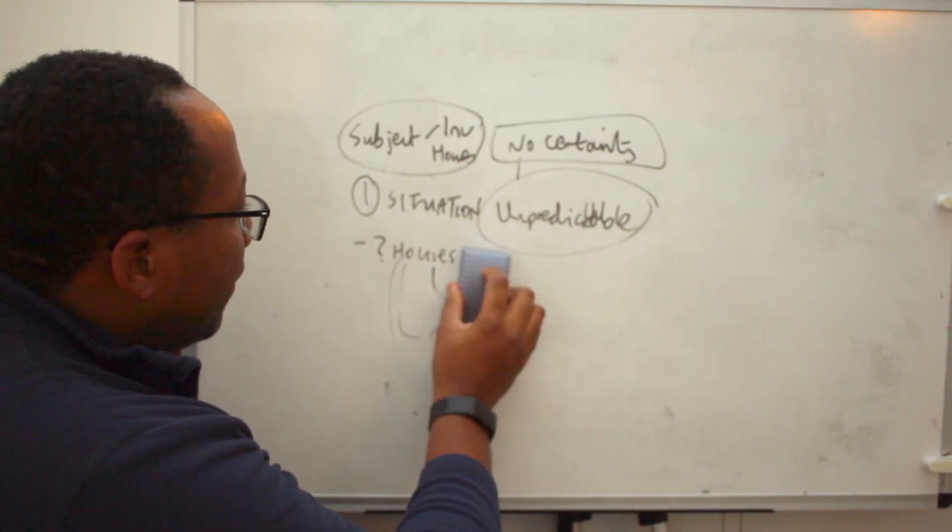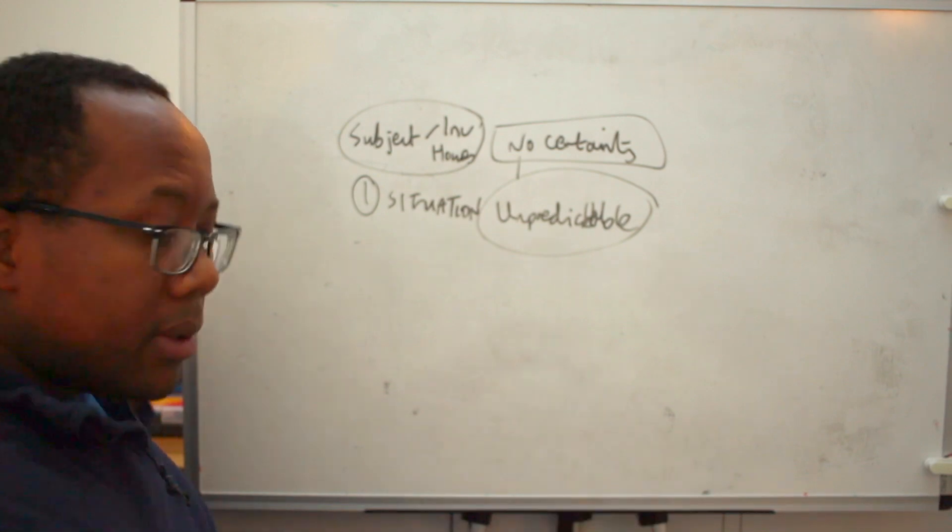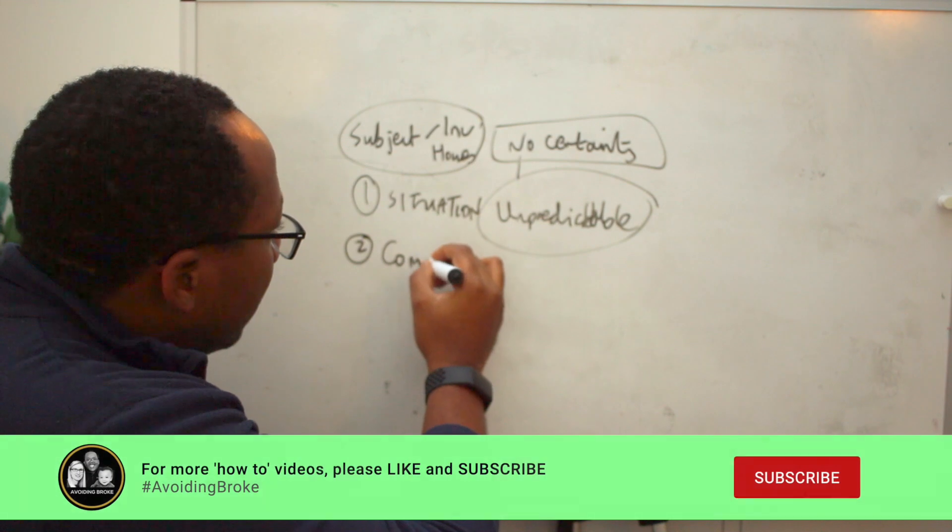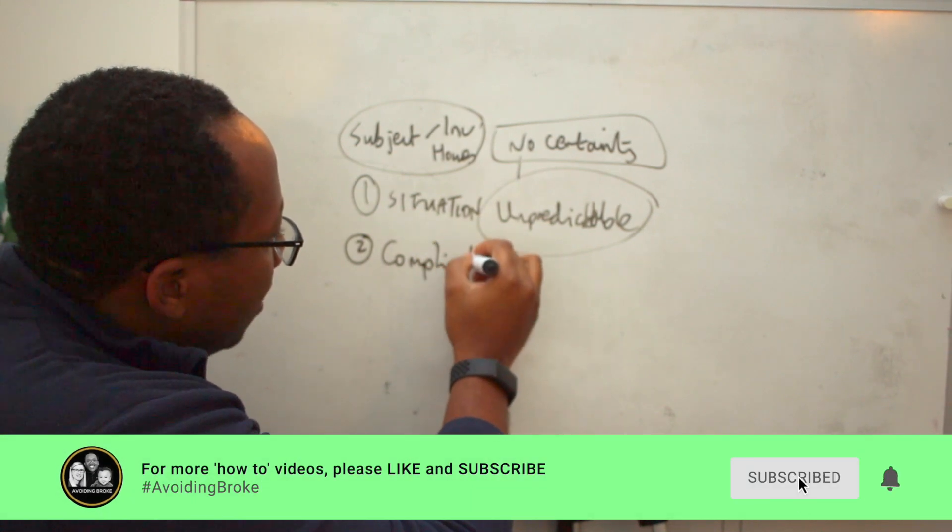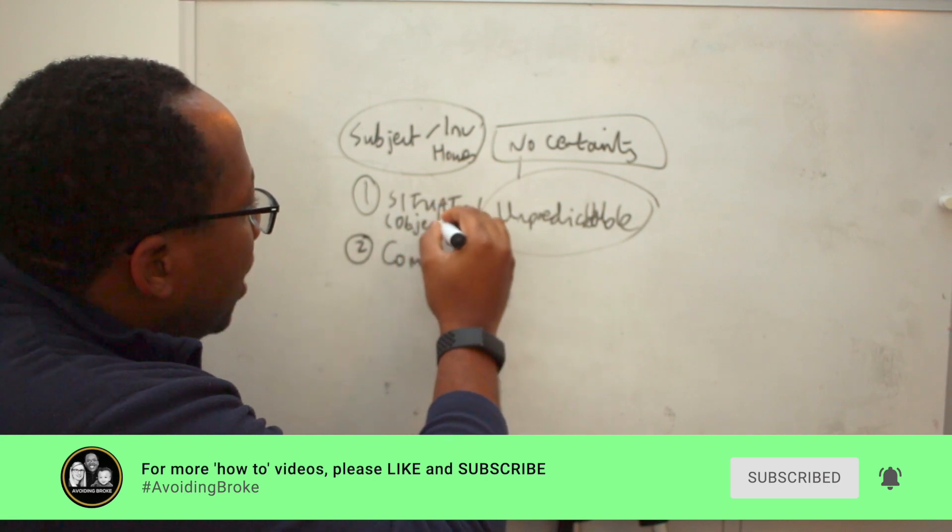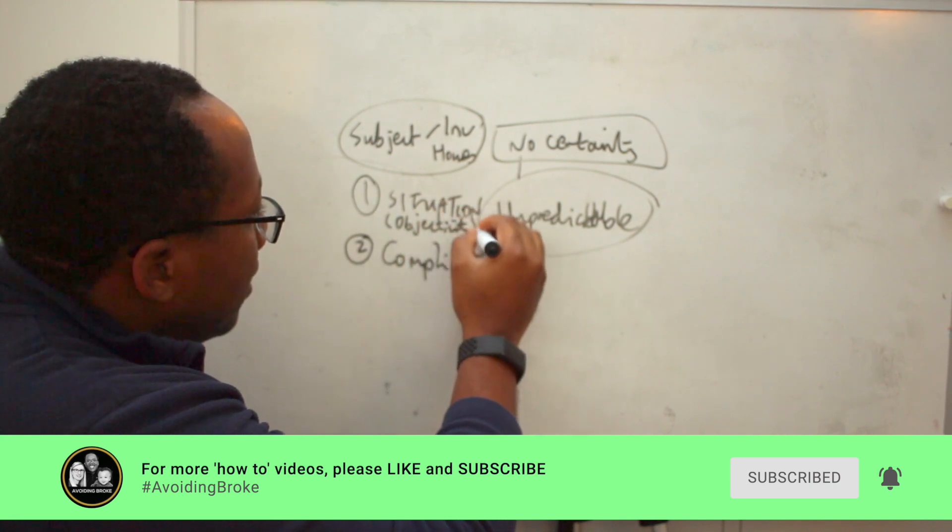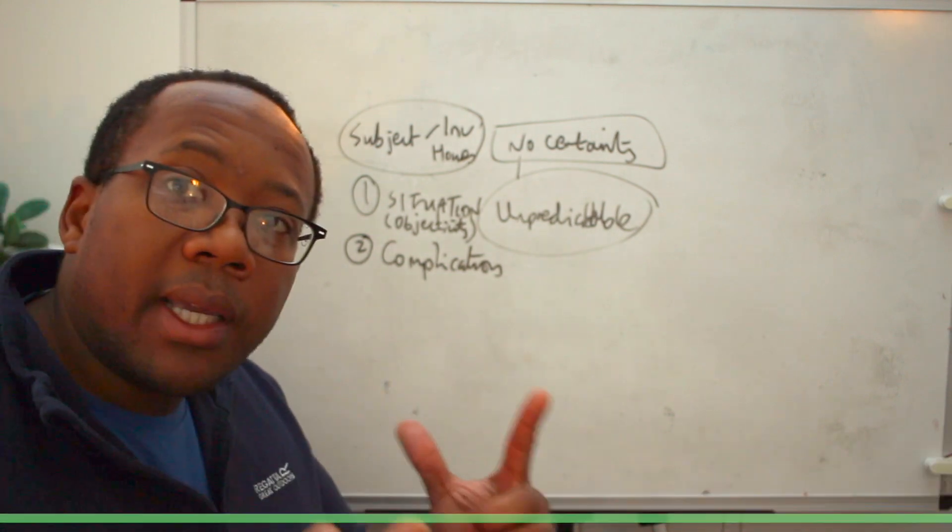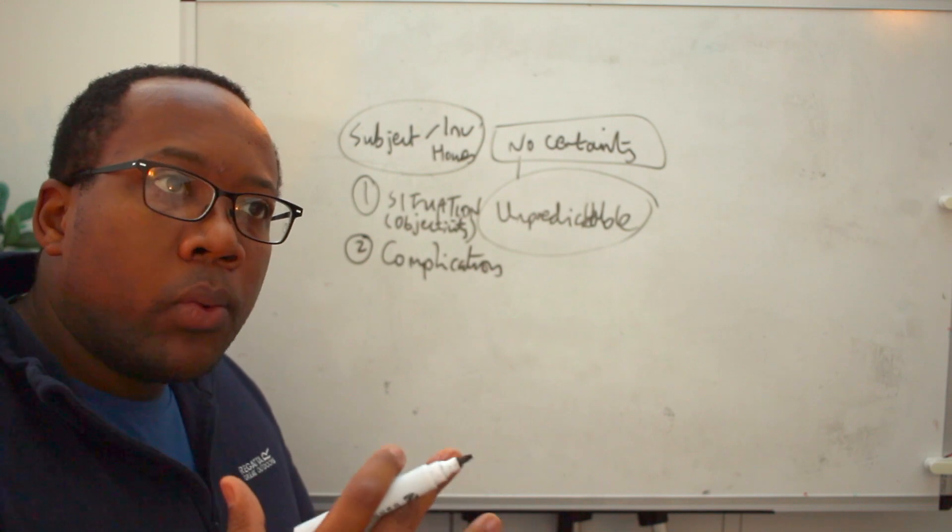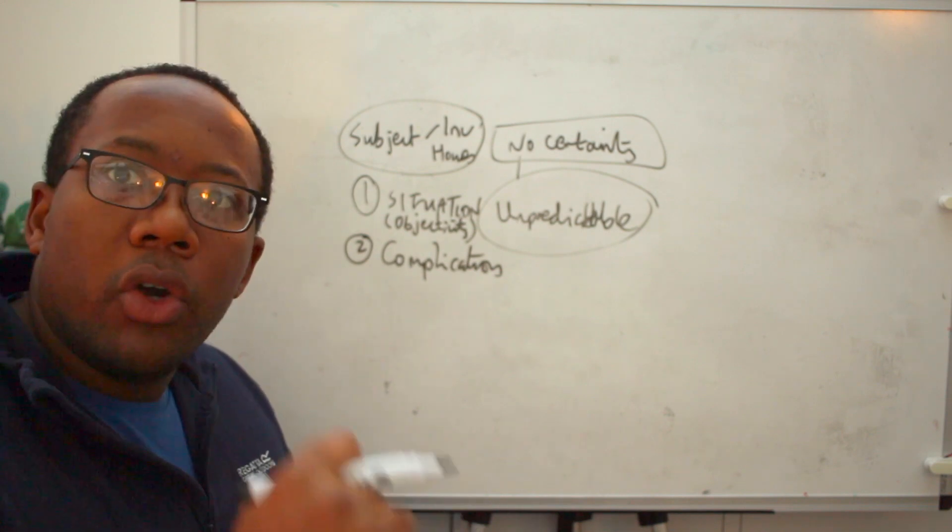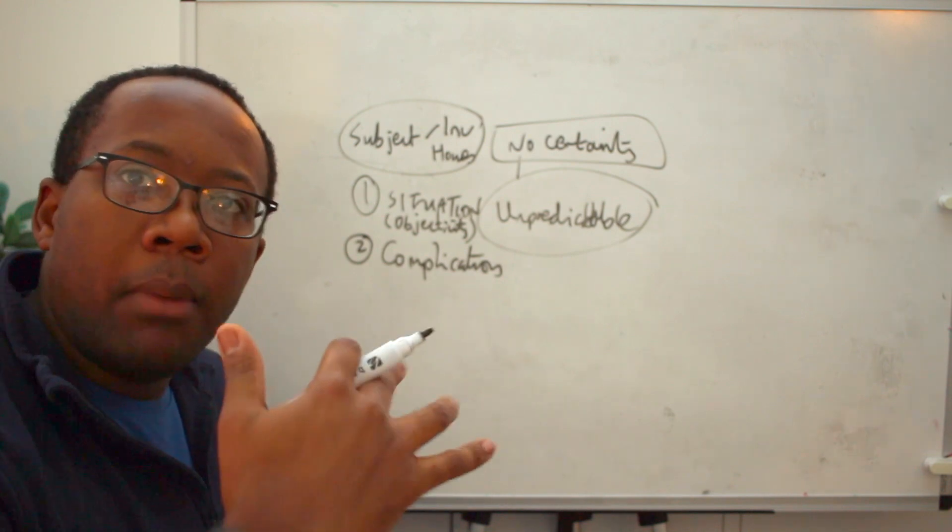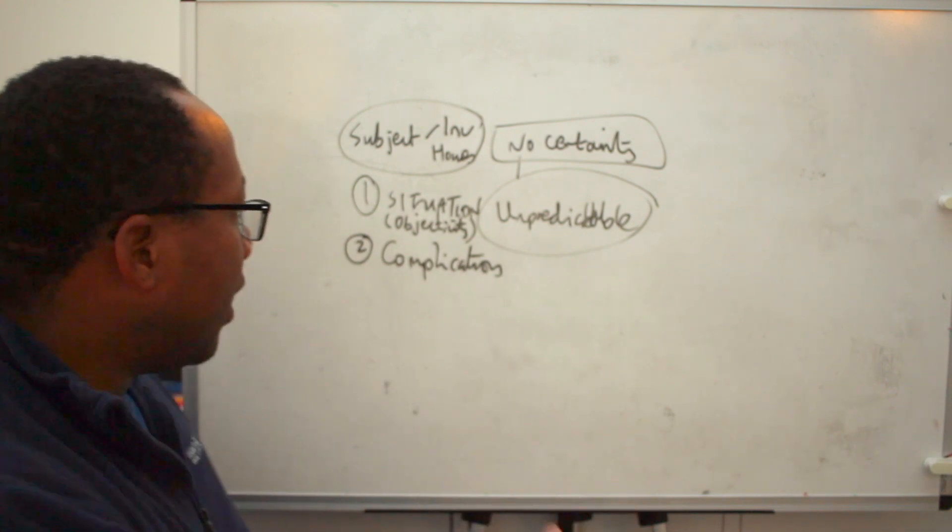So the next thing we'll do, we're just going to rub off as we go along, is we have to look at any complications. We look at the situation and the key thing here is objectivity. We then look at any complications. So complications are genuinely exactly as it says: things that we know could go wrong, things that we know are currently changing the dynamics of whatever market or situation that we're looking at.